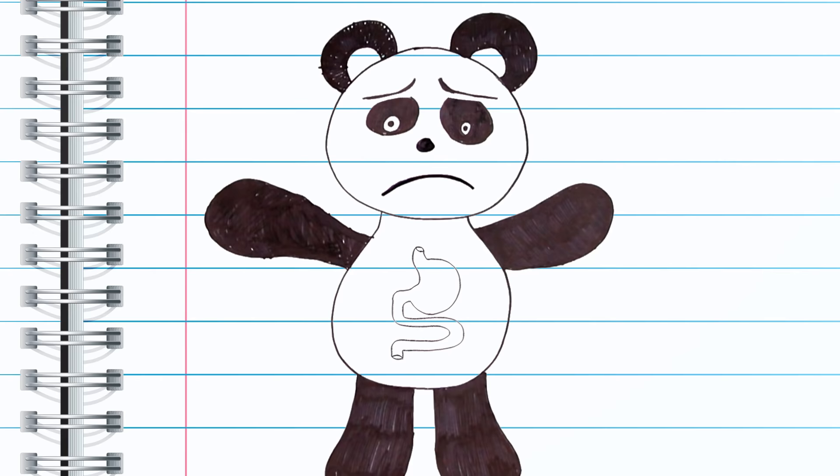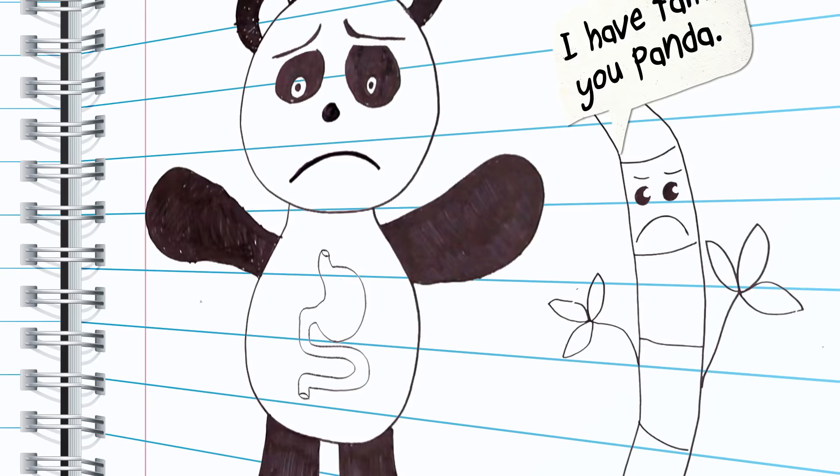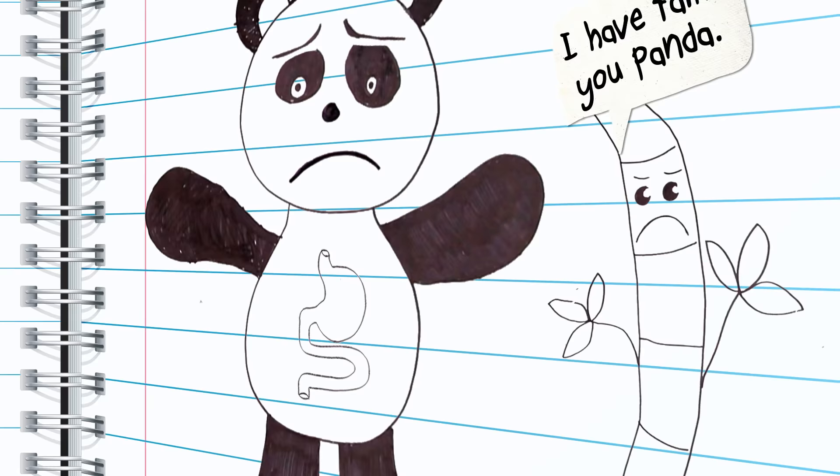Pandas, on the other hand, have a simple stomach and a short, small intestine meant to break down protein, of which bamboo contains very little. Panda keepers say that the bears will eat meat if you feed it to them, but that they won't hunt for it.